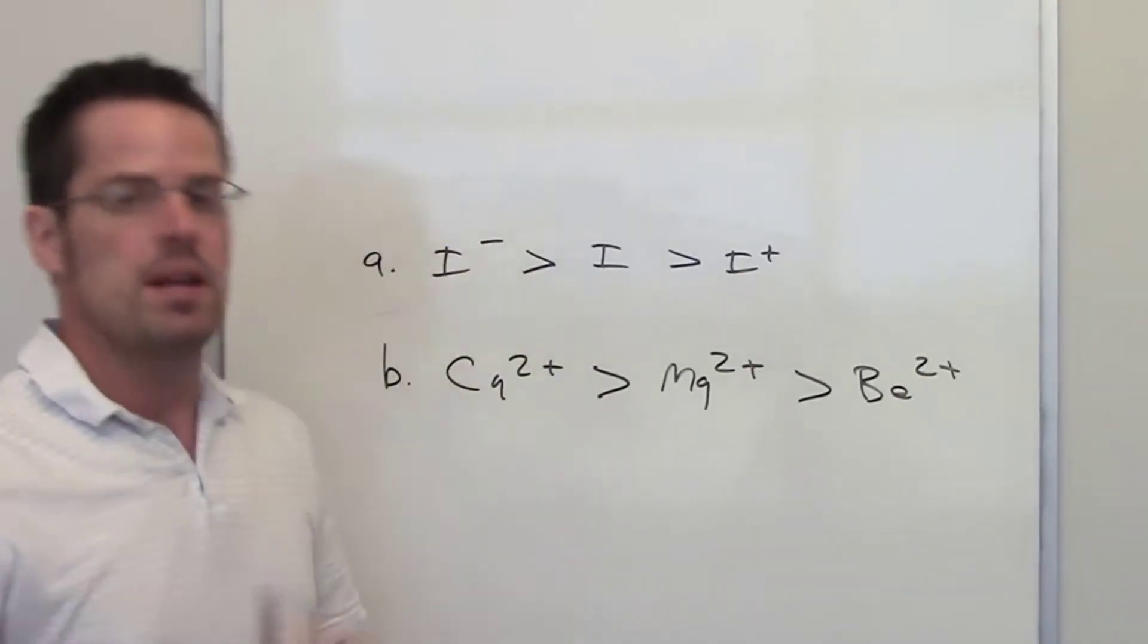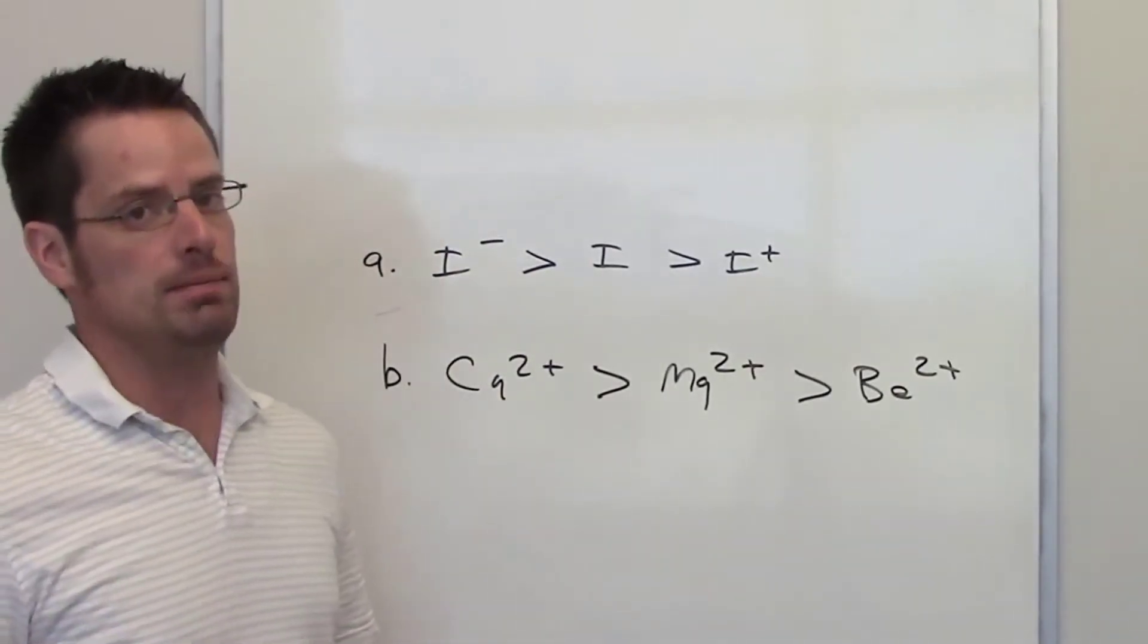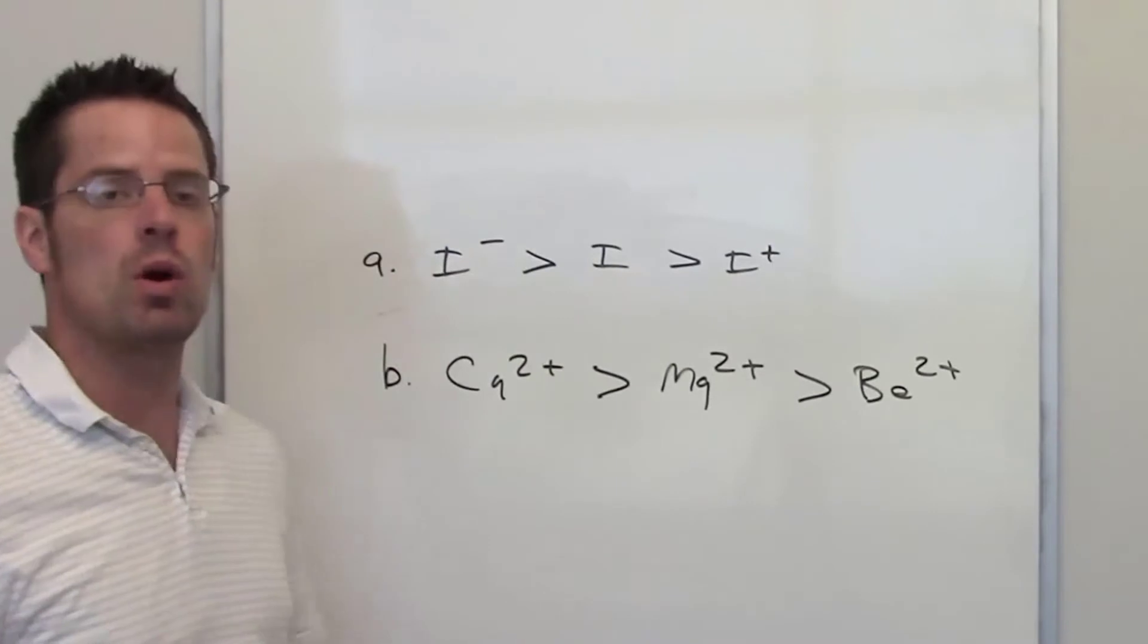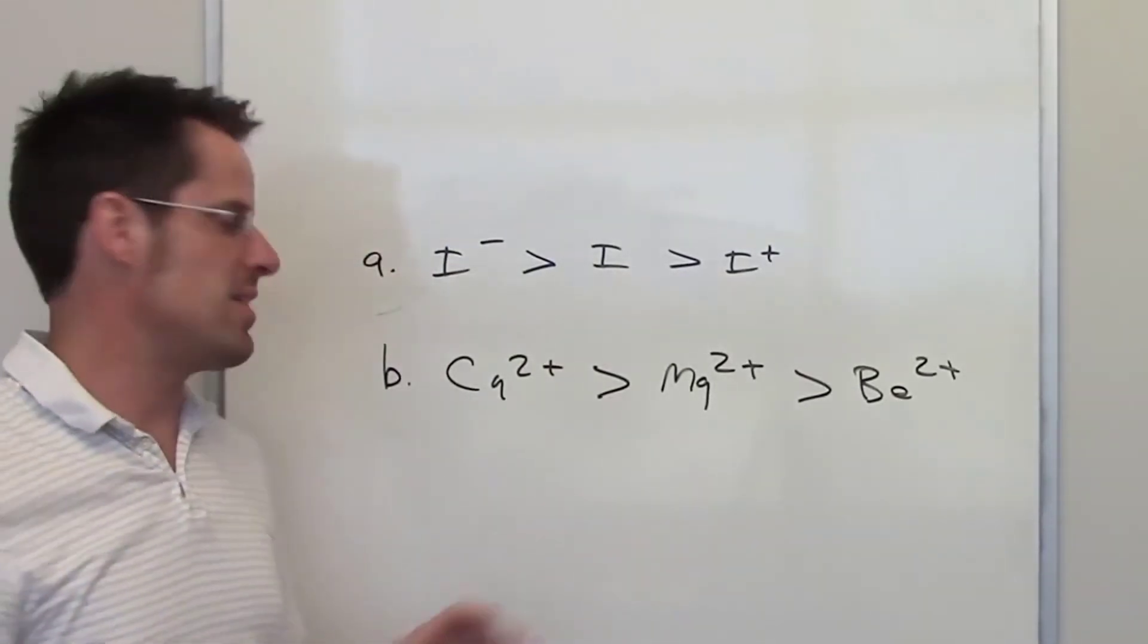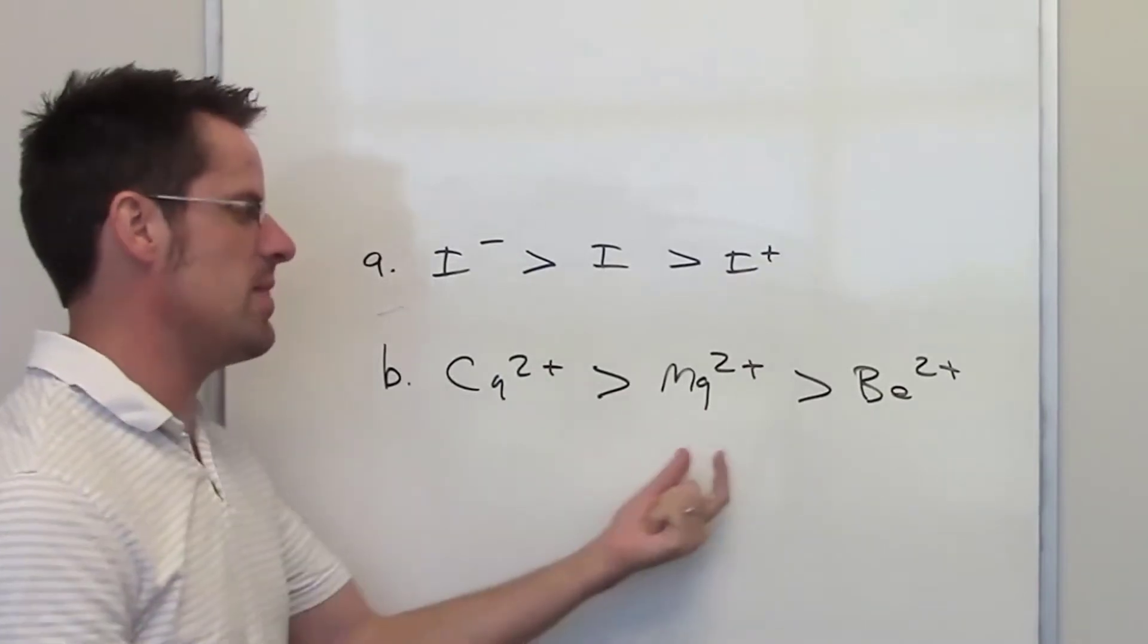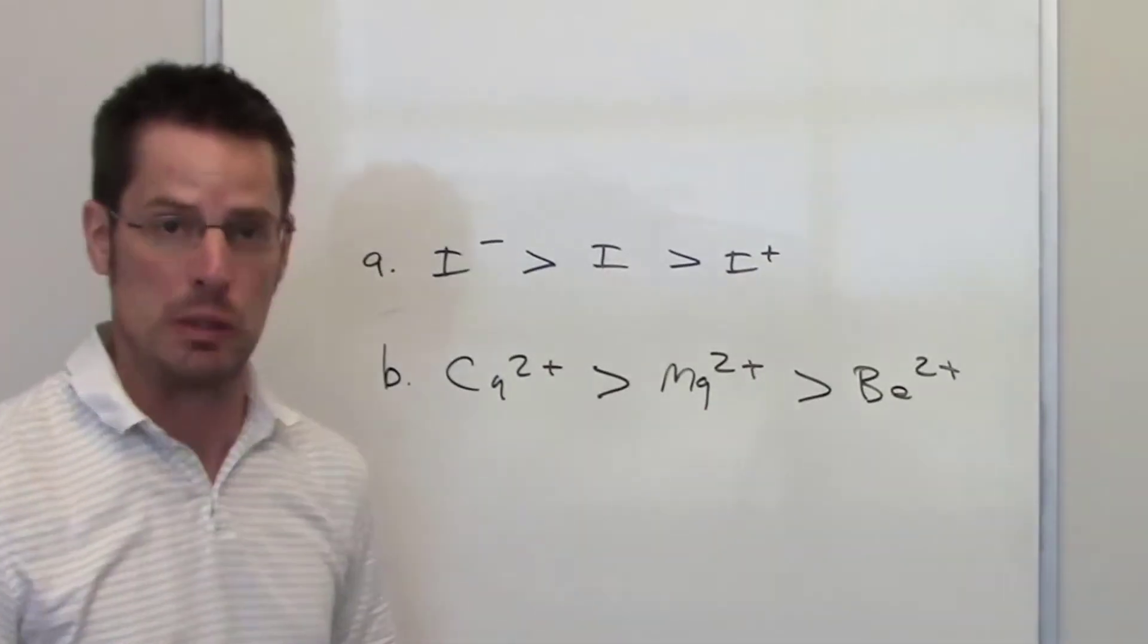As we've discussed before, the lower you go on a column on the periodic table, the more orbitals you have. Hence, this observation is caused by there being more orbitals in calcium than there are in magnesium than there are in beryllium.